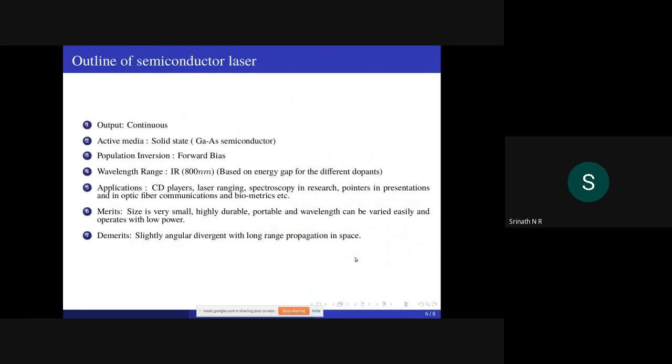Outline: output continuous, active media solid state gallium arsenide with dopants like tellurium and zinc, population inversion forward bias, wavelength range IR 800nm based on energy gap for different dopants. Applications: CD players, laser ranging, spectroscopy in research, pointers and presentations, optical fiber communications, biometrics, etc.